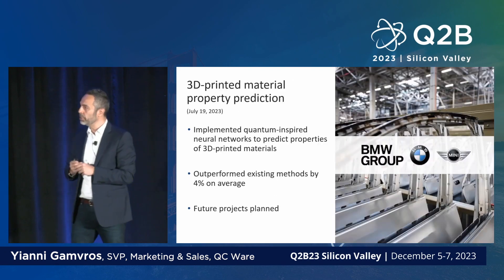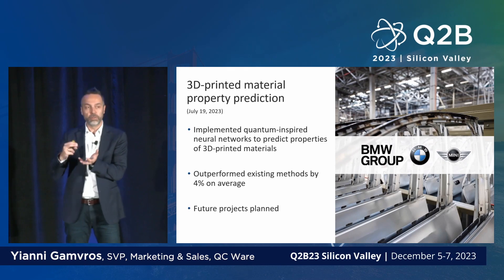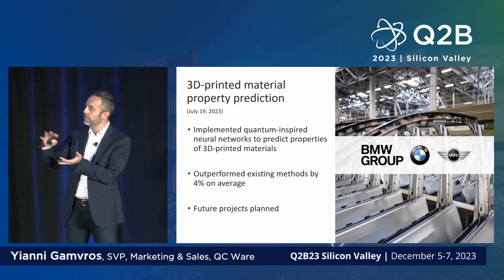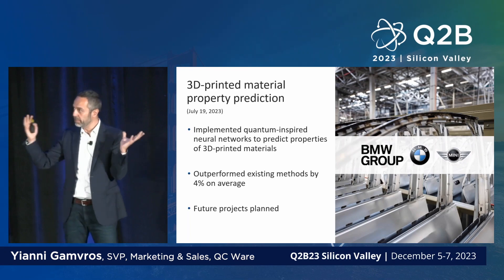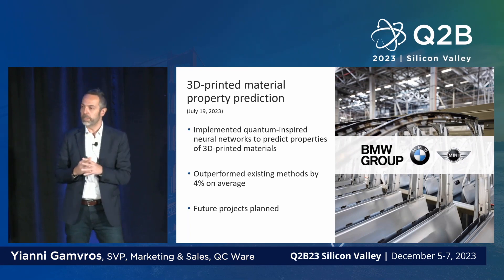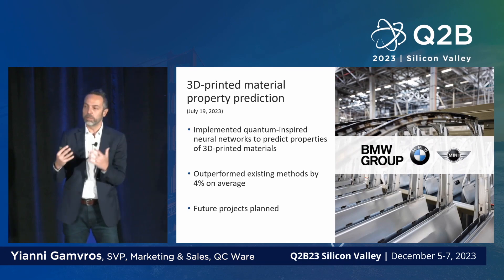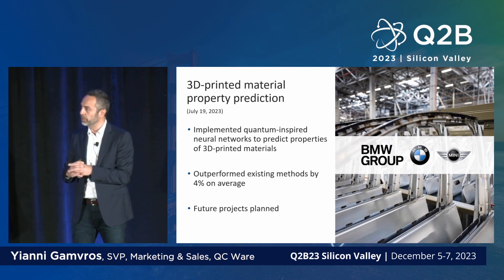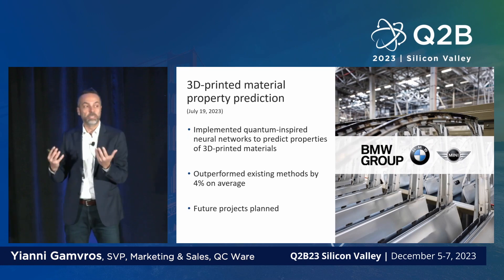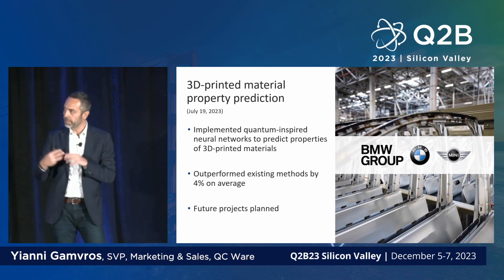We are continuing our collaboration with BMW on predicting parameters for 3D printers in the assembly room — advanced manufacturing. They have large 3D printers with hundreds of parameters to control, and they're still working to find the optimal settings for printing all the components they need on the assembly line. They were using classical machine learning techniques, and our challenge was to improve their prediction results using quantum machine learning.